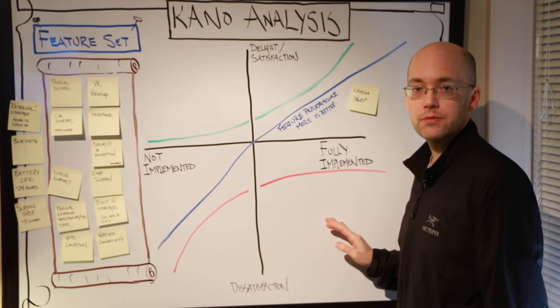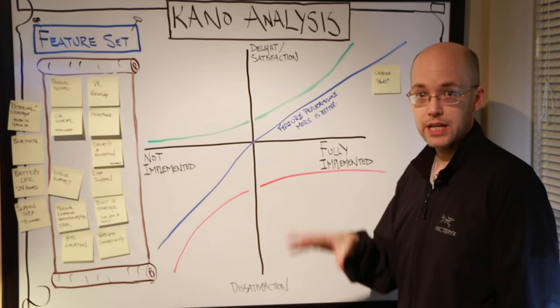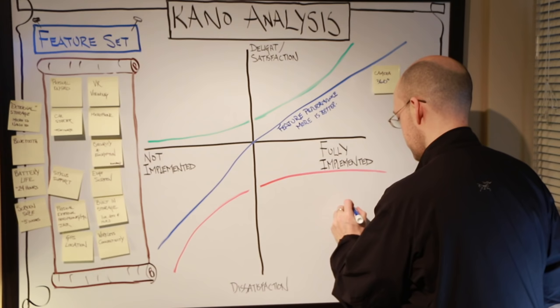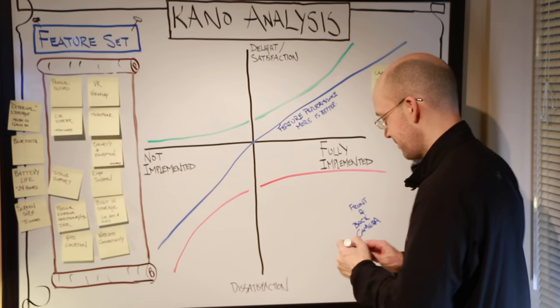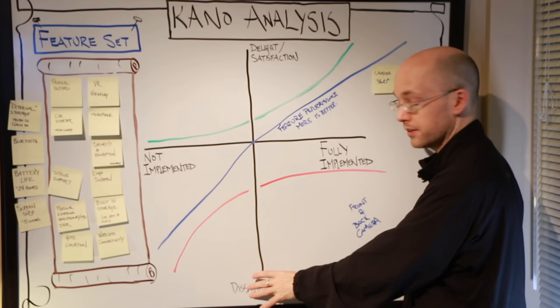But if we were now to make it the camera set that we need to have, we're going to assume, and I'll write it down here, front and back camera. When I put something down in this quadrant, it means I have to build it or else I'll create a lot of dissatisfaction.